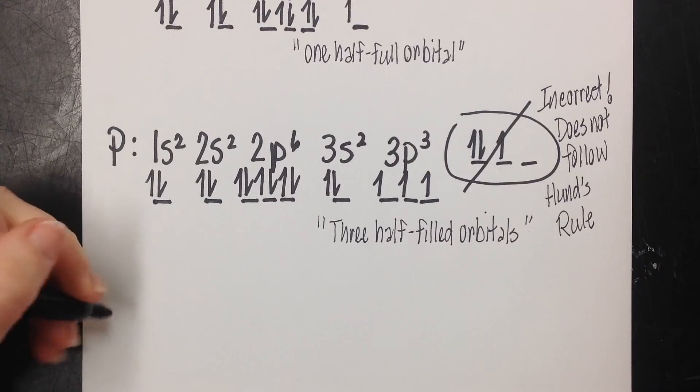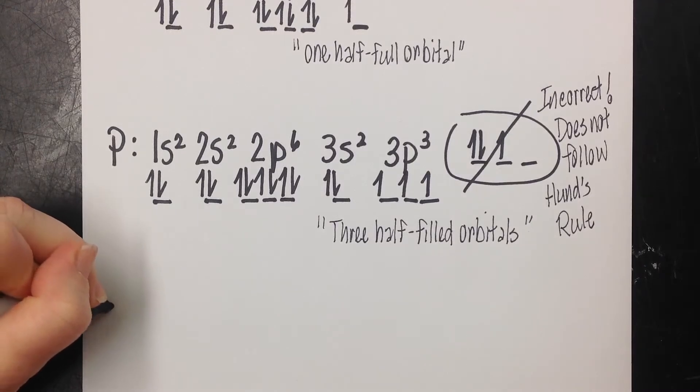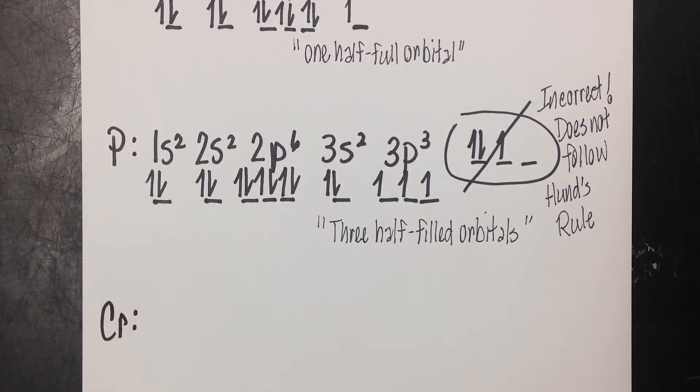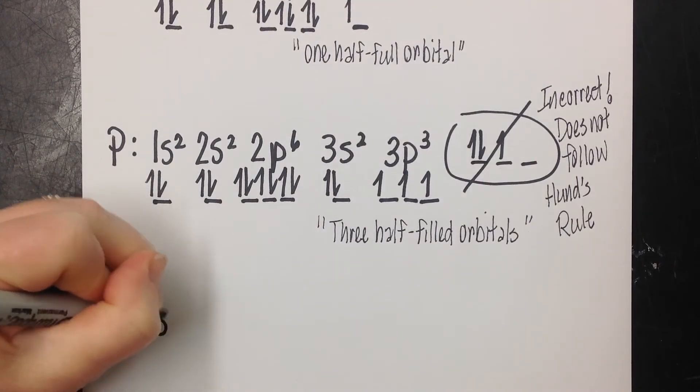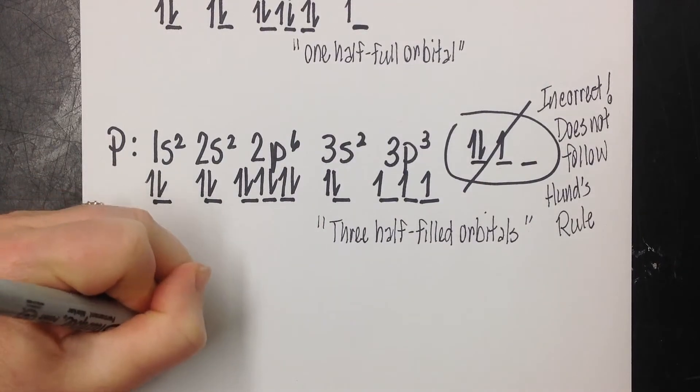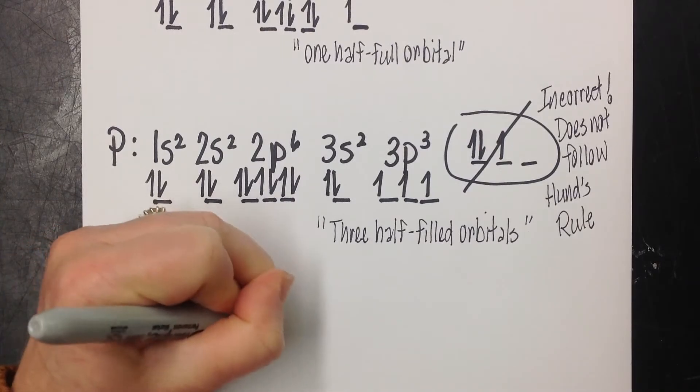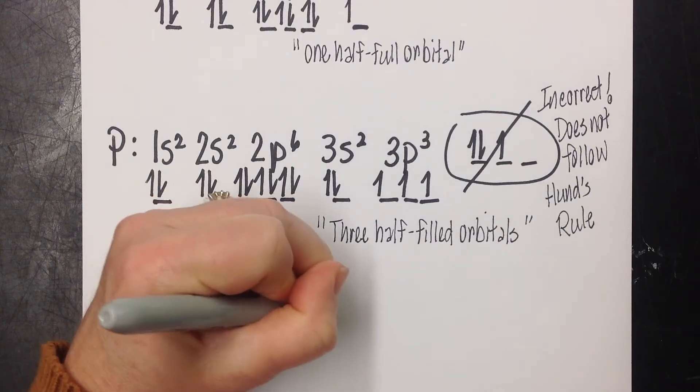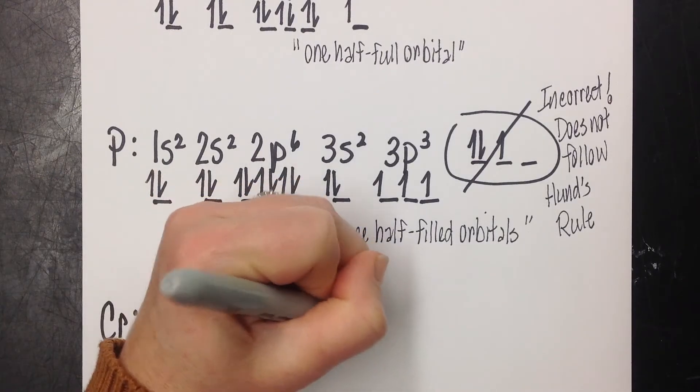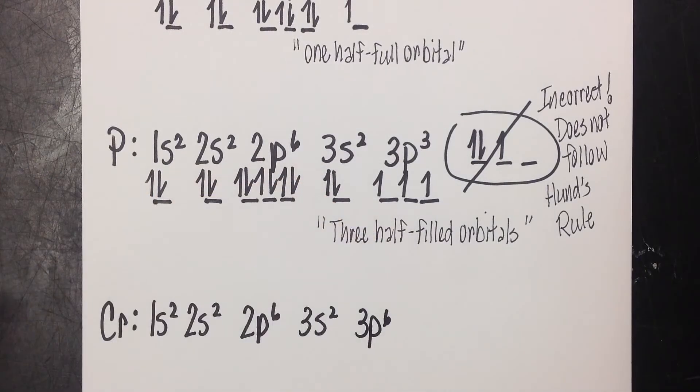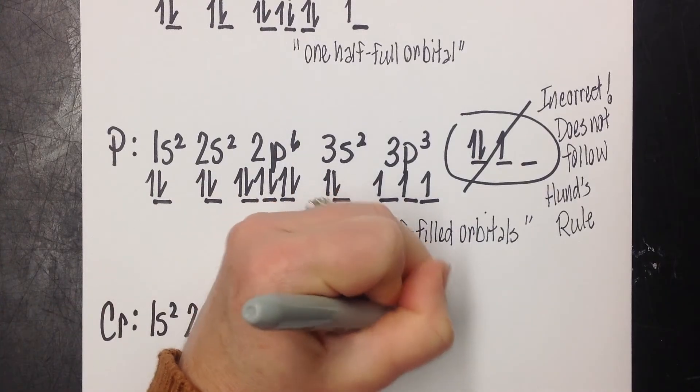So let's look at chromium. Let's look at something in our D-block. So we're going to do the electron configuration. I'm going to be careful with my spacing, so I've got room for all these little parking spots. So we're going to start with 1s2, 2s2, 2p6, 3s2, 3p6, 4s2. Am I there yet? Nope.